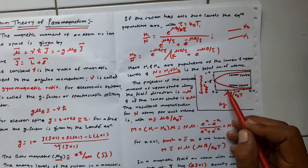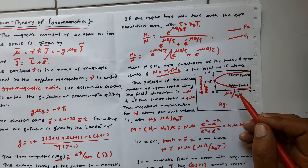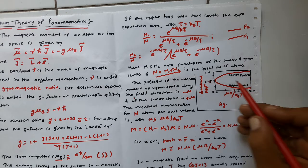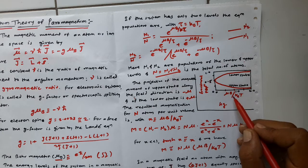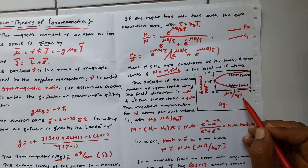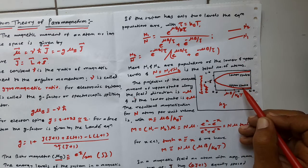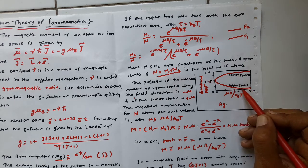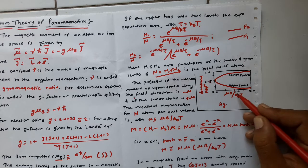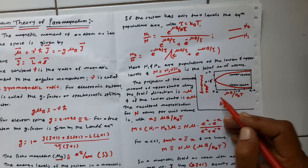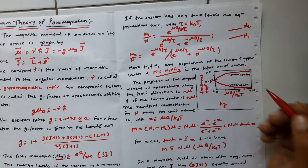The fractional population of the two levels in thermal equilibrium at temperature T in magnetic field B is plotted with the horizontal axis representing μB/k_BT. As the lower state population increases the upper state decreases. At infinite temperature, there is an equal distribution between the two levels.